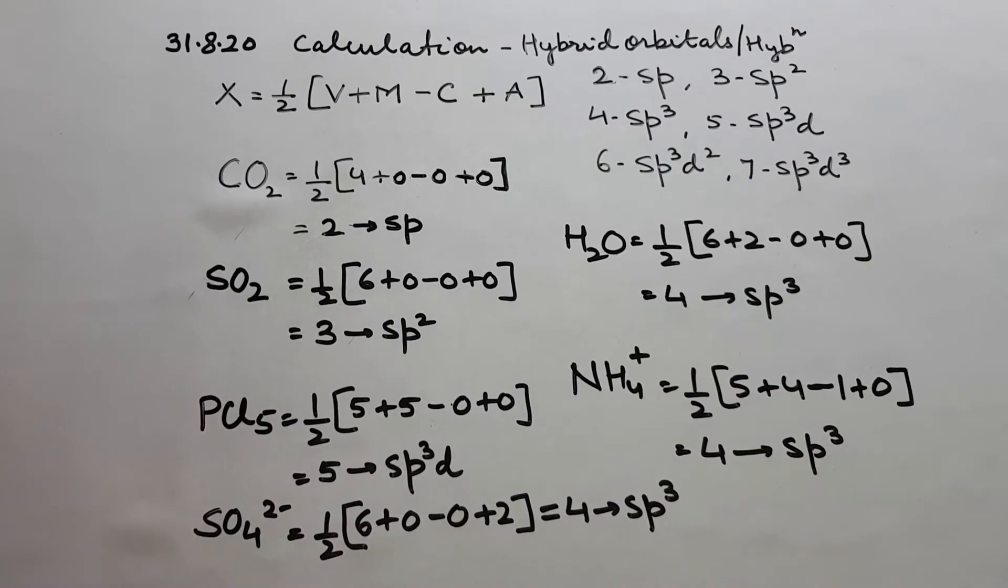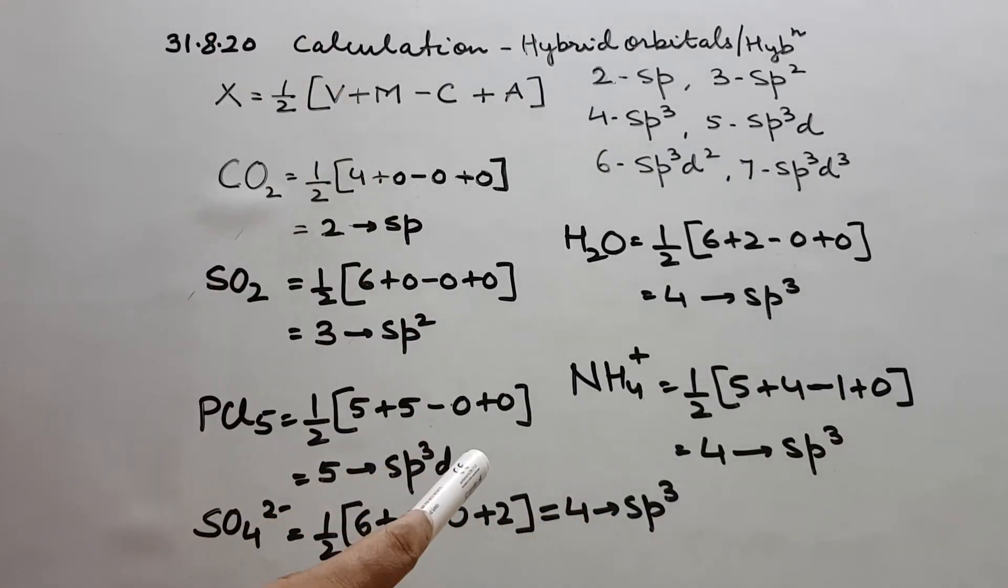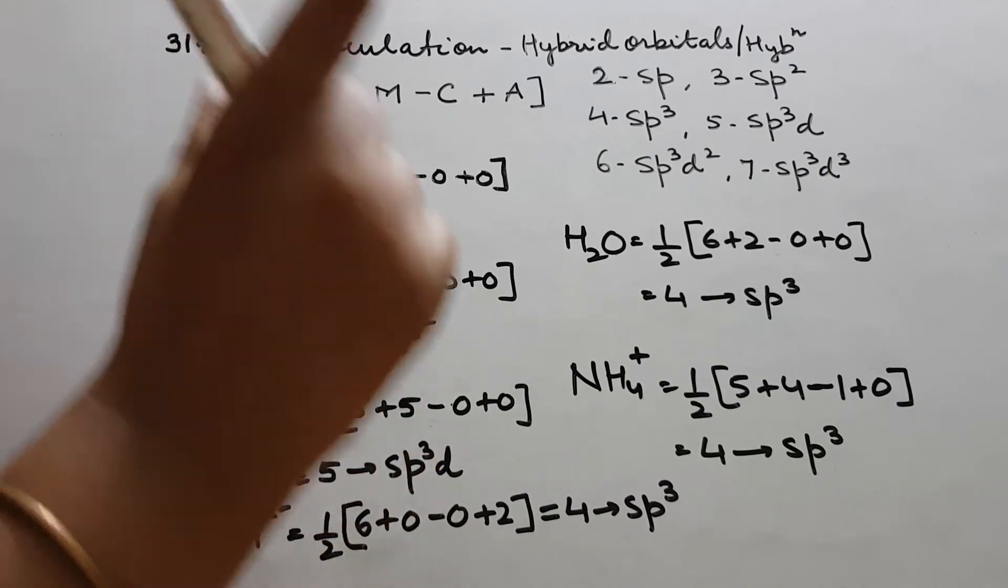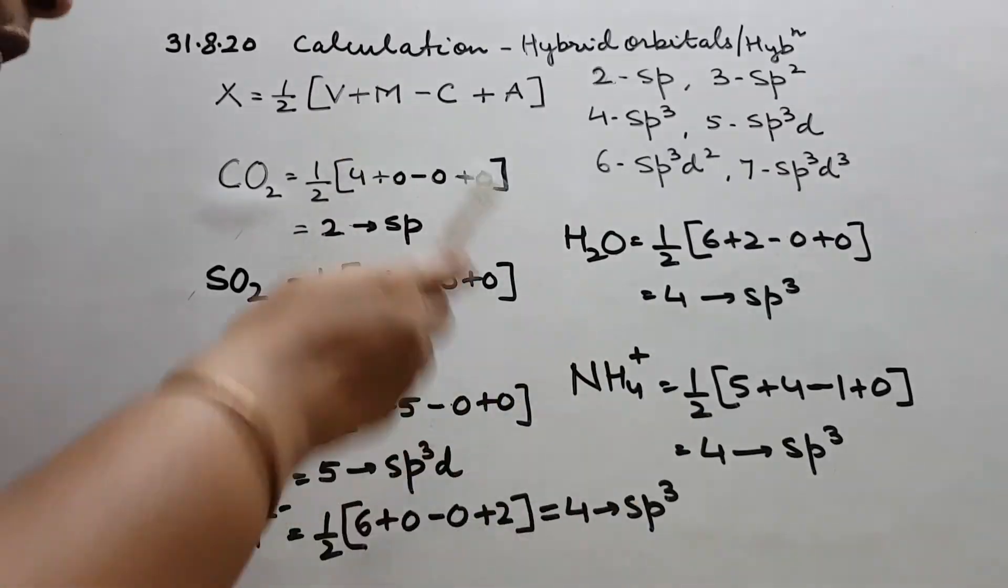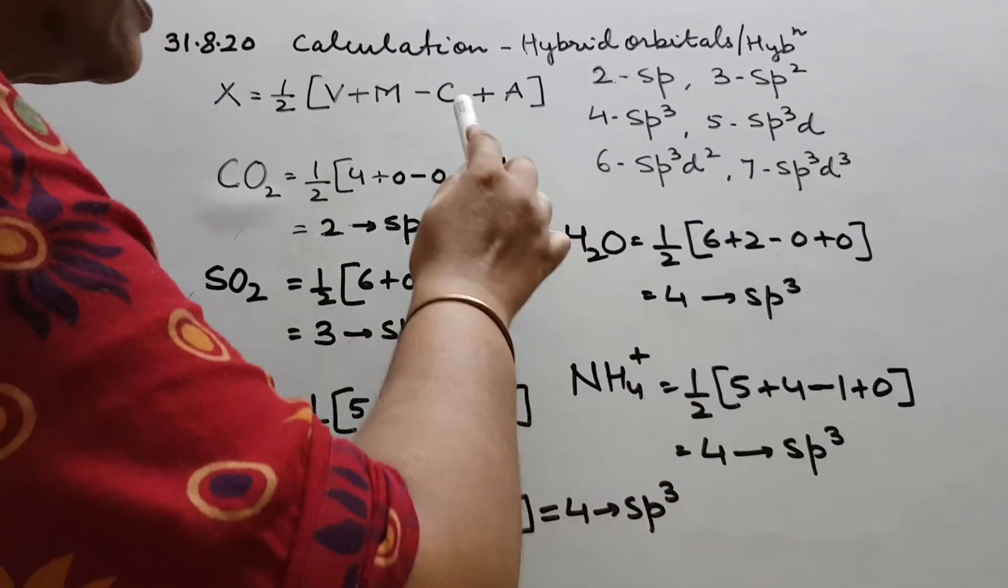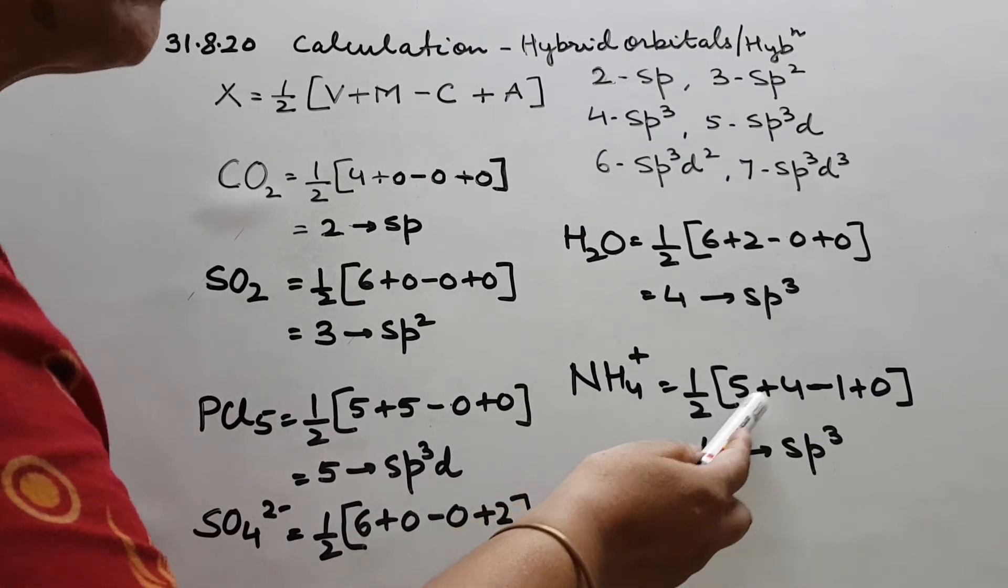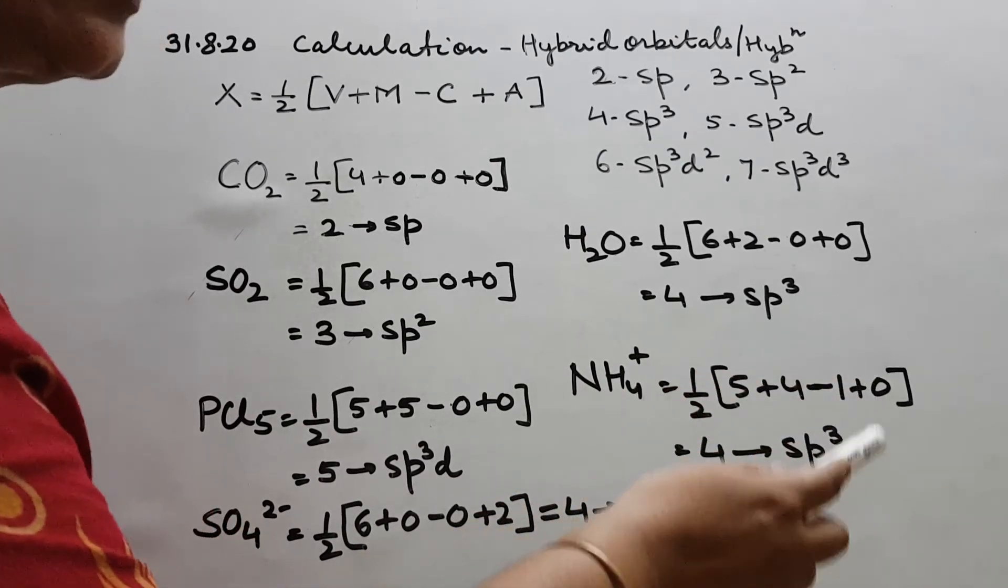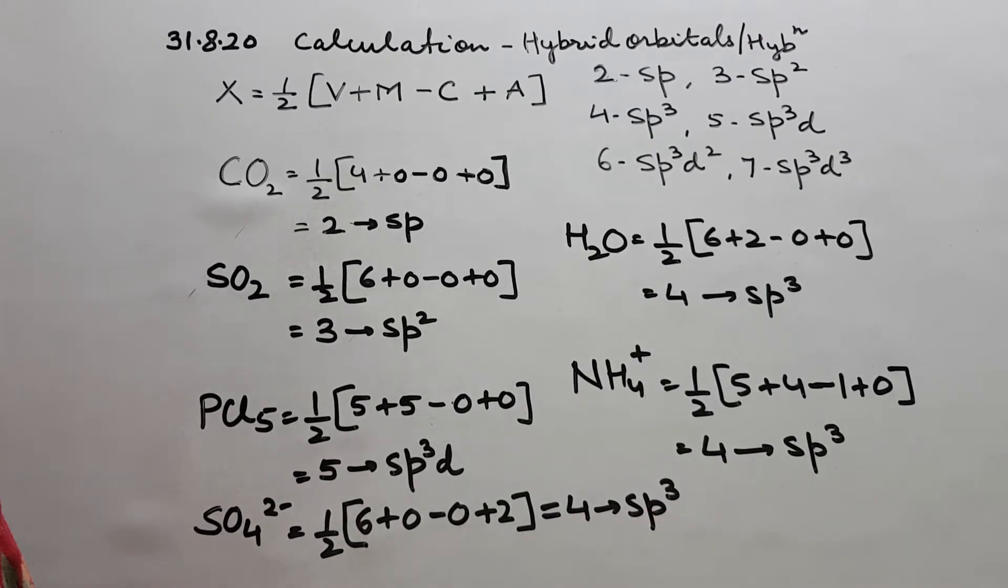Then you see, minus the charge of cation. It has got 1, so this charge had to be subtracted, minus 1. Again I say, we will go for the numerical value, the digit, the number, not the plus minus. Only see the charge on cation which is minus 1 here. And then anionic charge 0. So it is 5 plus 4, 9 minus 1, 8. 8 by 2, 4. 4 means sp3.